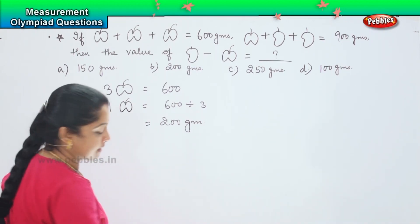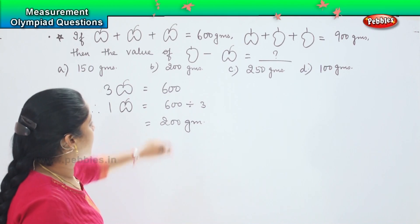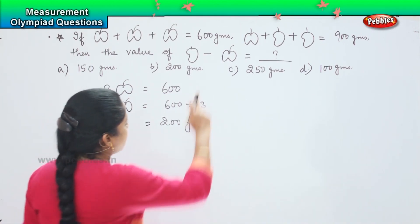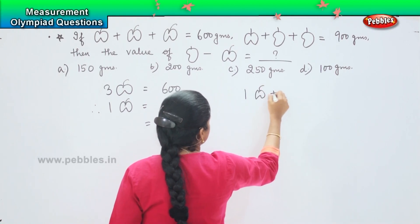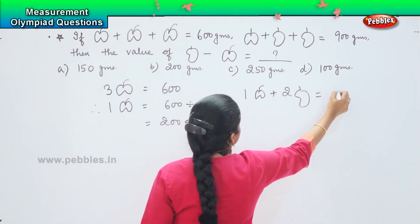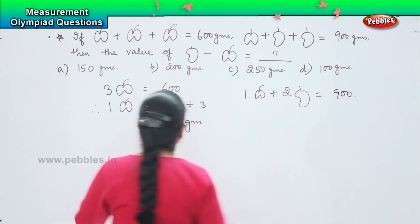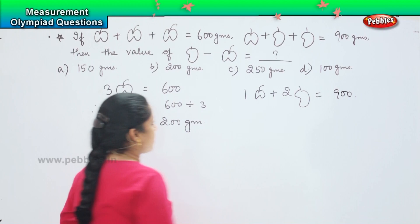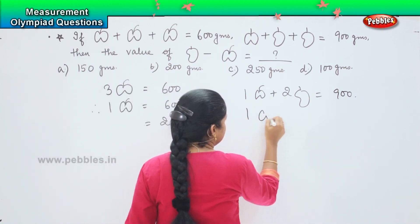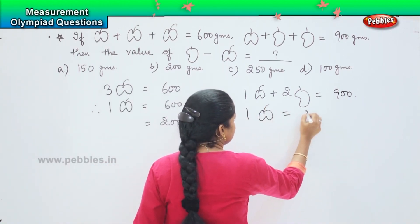Now, the next one it is given. We know that the value of one apple is 200 grams. Here it is given that one apple plus two mangoes equals 900 grams. We know the value of one apple is how much? It is 200 grams. So one apple equals 200.